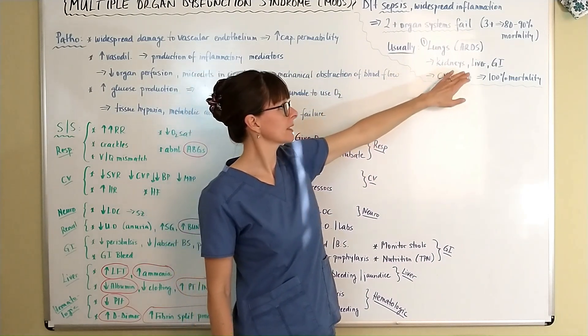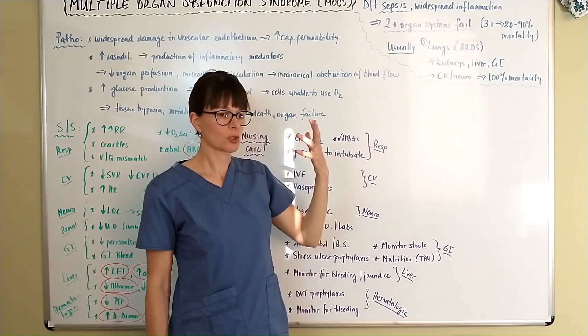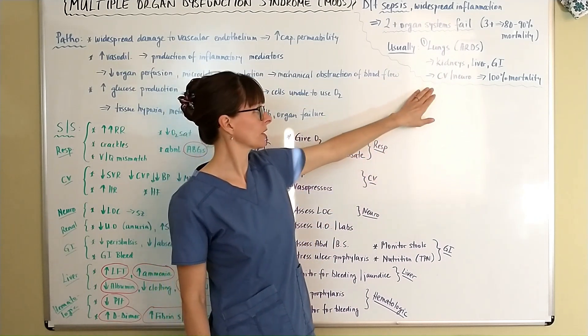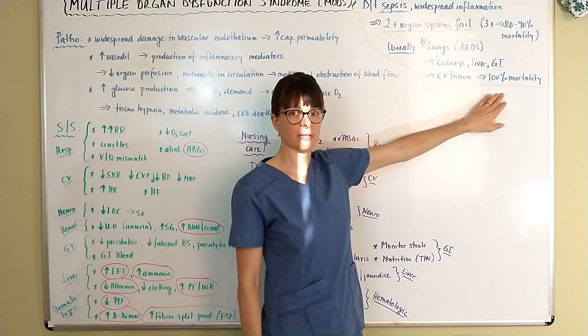What follows is the kidneys, liver and GI system fail and if it spreads so far that the cardiovascular as well as the neurologic system are affected, it leads to 100% mortality.